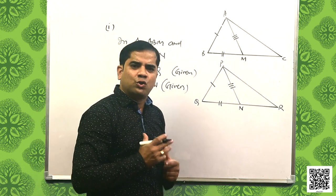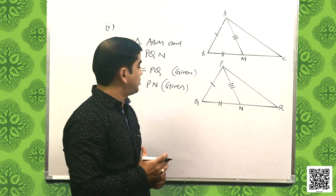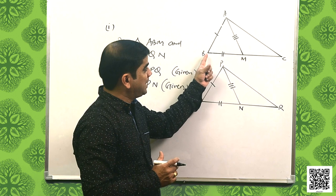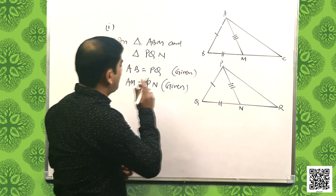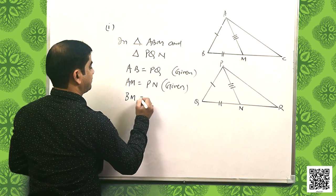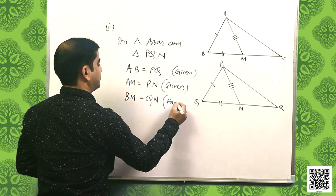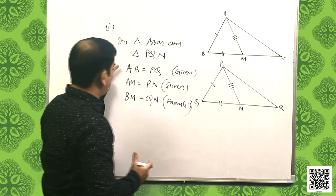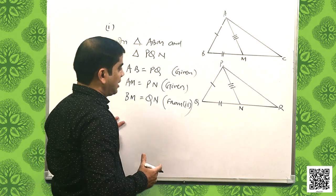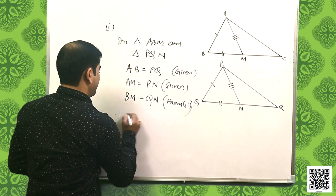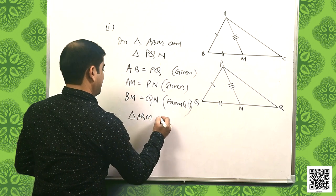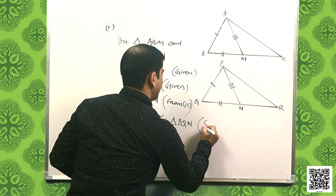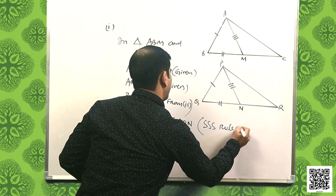We also have BM is equal to QN as we just proved. So we now have three data points for the congruency purpose, and therefore triangle ABM is congruent to triangle PQN by SSS rule of congruency.